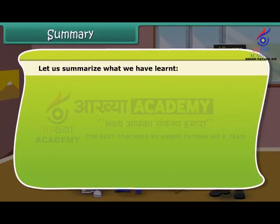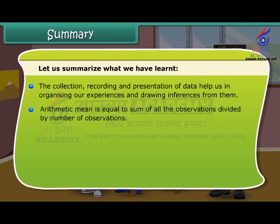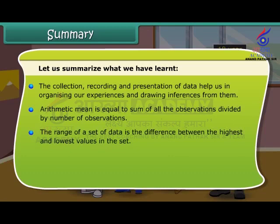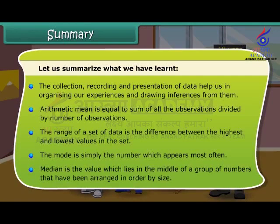Let us summarize what we have learned. The collection, recording and presentation of data help us in organizing our experiences and drawing inferences from them. Arithmetic mean is equal to the sum of all the observations divided by the number of observations. The range of a set of data is the difference between the highest and lowest values in the set. The mode is simply the number which appears most often. Median is the value which lies in the middle of a group of numbers that have been arranged in order by size.